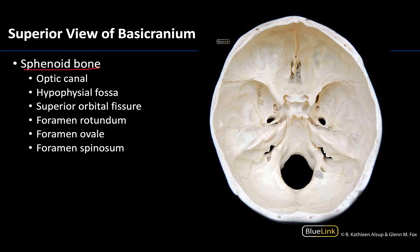The sphenoid bone has a lot going on. We're going to focus mostly on openings that allow for neurovasculature to traverse, and we will have one fossa. Starting anteriorly and making our way posteriorly, you can see the sphenoid bone in this nice butterfly shape in this region. You have the lesser wings and the greater wings, and then you can see all of these holes right here.